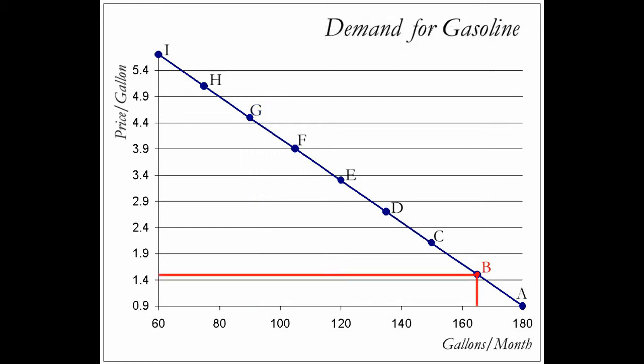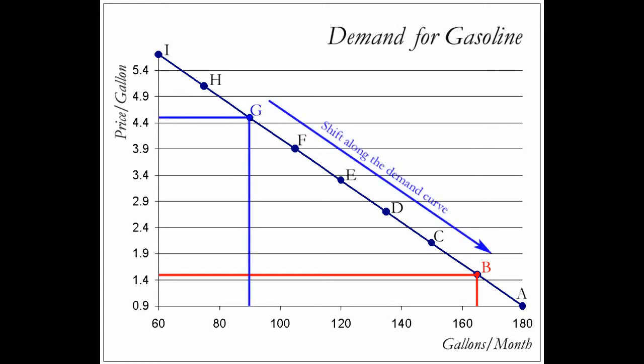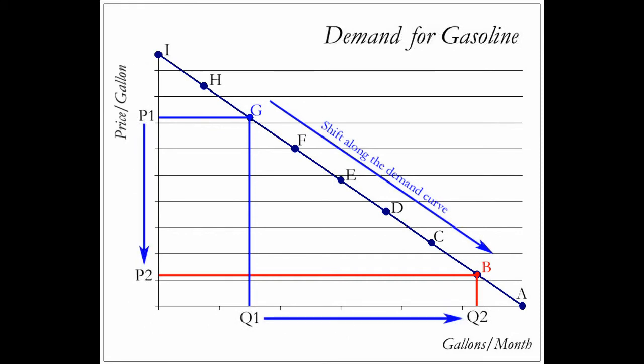Let's choose point B again. At point B, we see that the red lines point to a price of $1.50 per gallon with a quantity consumed of 165 gallons. The decreased price comes with an increase in the quantity demanded, in harmony with the law of demand. Together we see what happens when we compare points G and B: we see a drop in prices and an increase in the quantity demanded.